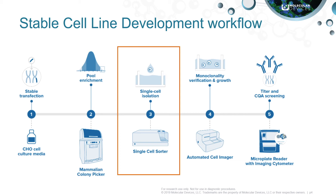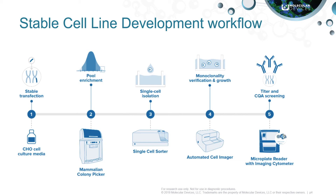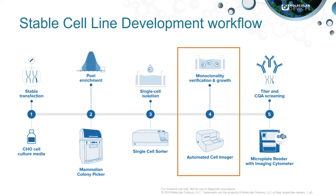Single cell cloning is extremely critical in the stage of the cell line development process. It is important to verify that single cells are properly isolated from one another within a microplate, and this is often documented using a cell imager. Cells are typically monitored for growth following the cloning stage to ensure that their growth properties have not changed dramatically. This includes tracking the progress of a single cell as it grows into a colony of cells.